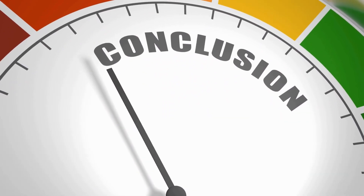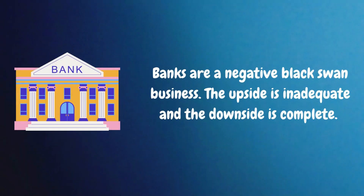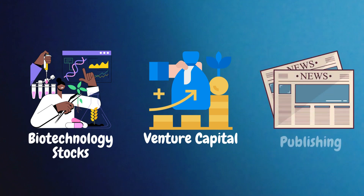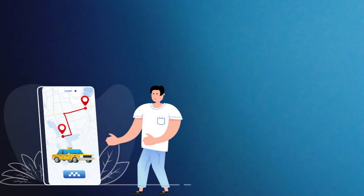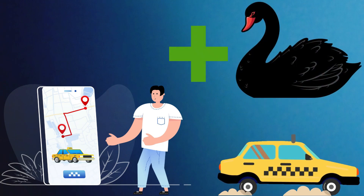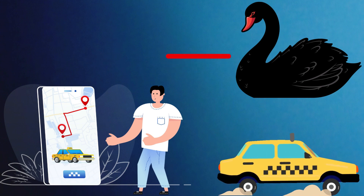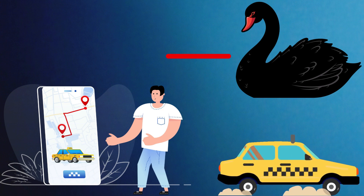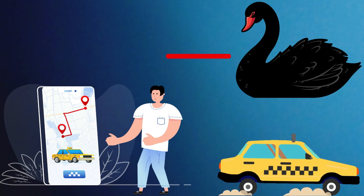So, for the bottom line, banks are a negative black swan business. The upside is inadequate and the downside is complete. Examples of positive black swan investing include biotechnology stocks, venture capital, publishing, etc. The venture investor that invested in Uber in its beginning was exposed to a positive black swan, but today would be more exposed to a negative black swan with the same investment. The key principle in black swan investing is to find extremely aggressive, and as unreasonable as possible, assets. Hence, when you find that chance, take it.